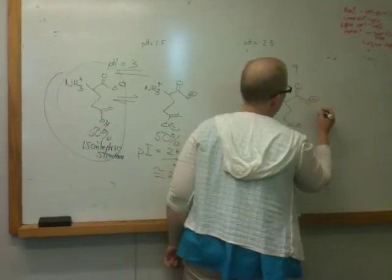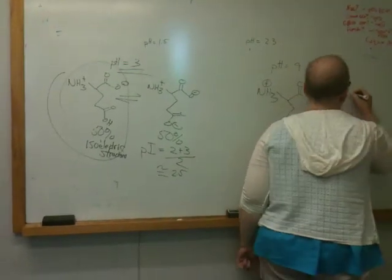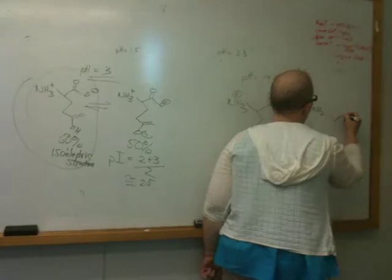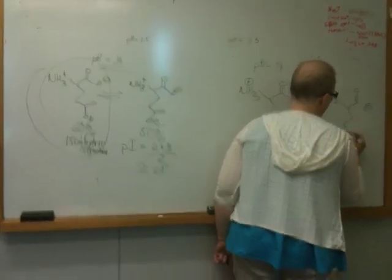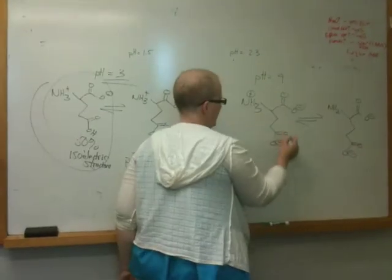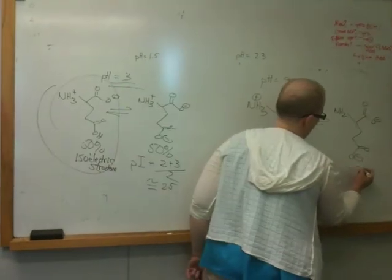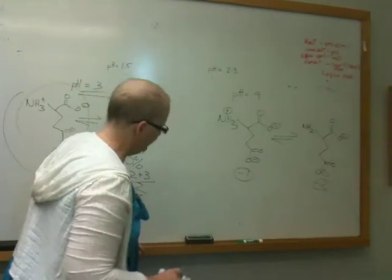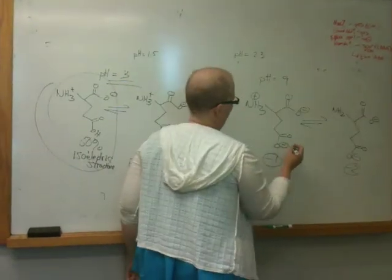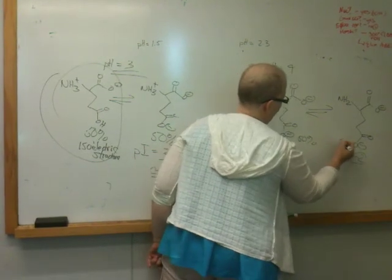So what happens at pH 9? At pH 9, we hit that point, that equivalence point, and we know that we have 50% of this. Now we've gone beyond the isoelectric point. This has a net charge of what? Minus 1. And this has a net charge of minus 2. So we are really basic. These are not natural conditions. But at this pH, we have 50% of this and 50% of this. And again, it could be calculated using the Henderson-Hasselbalch equation.